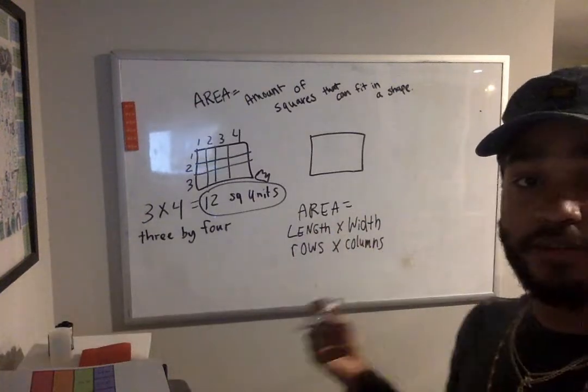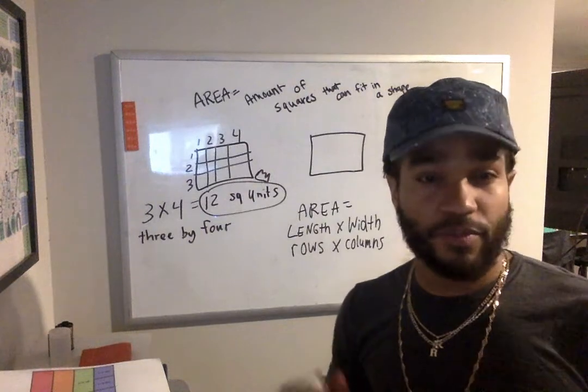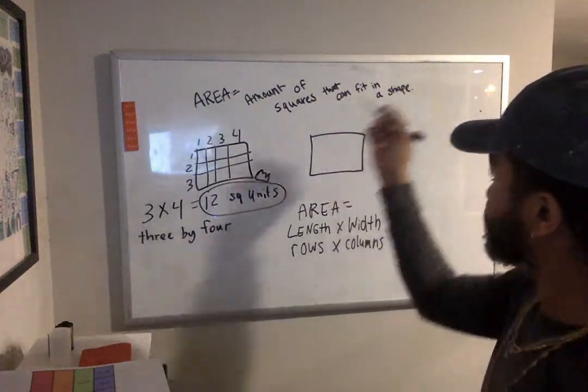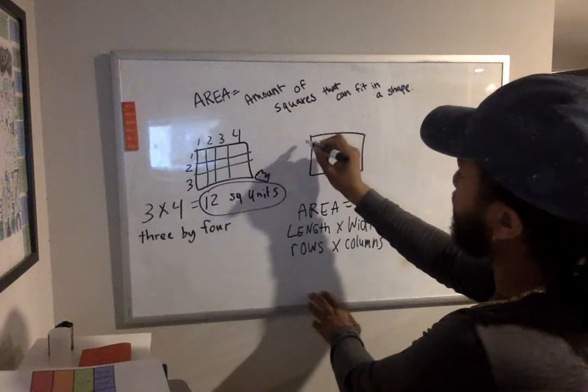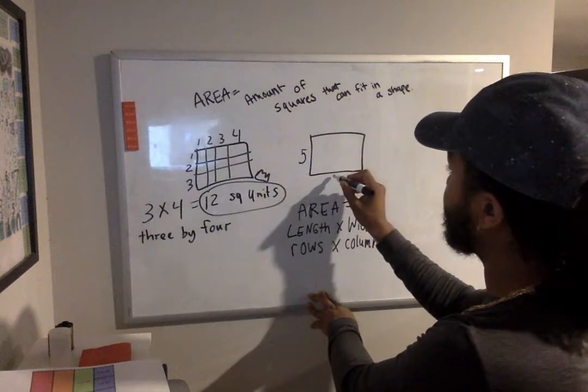But length times width, it's more specific when we're trying to find area. So let's say over here we have five. And over here we have eight.